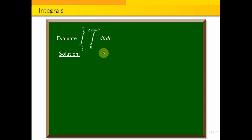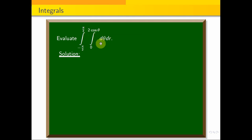Now we will see how we integrate. Whether it is double integration or triple integration, the order of integration is very important. It is the limit with theta, so in the first step we integrate R, and then theta is integrated.